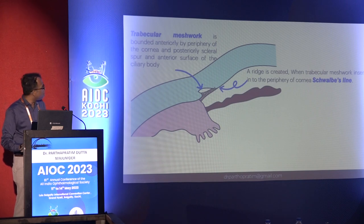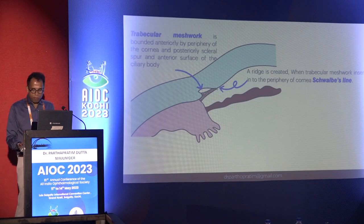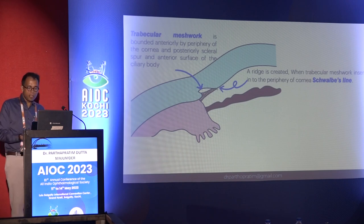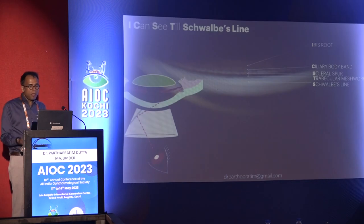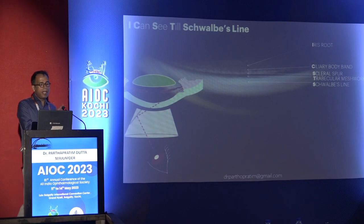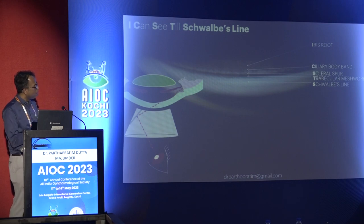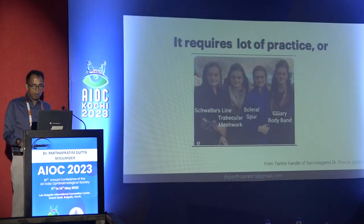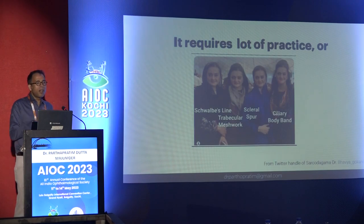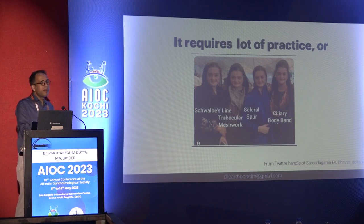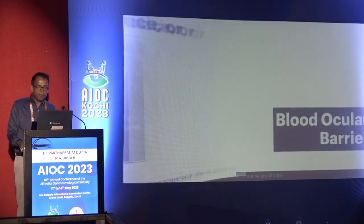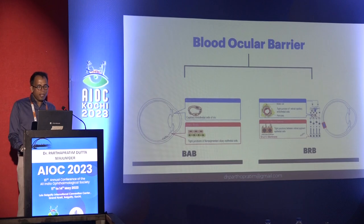The trabecular meshwork inserts into the periphery of the cornea, creating a prominent bridge called Schwalbe's line. When we do gonioscopy, we see these structures. You can use the mnemonic 'I can see till Schwalbe's line' — iris root, ciliary body band, scleral spur, trabecular meshwork, and Schwalbe's line. It requires a lot of practice to identify these structures in gonioscopy, so try to do it with these anatomical landmarks in mind.